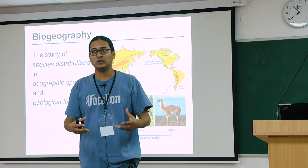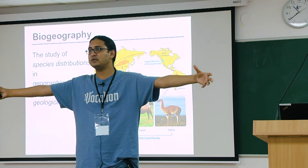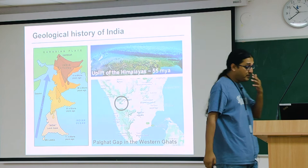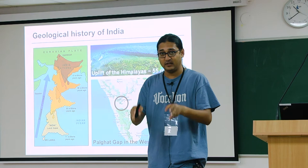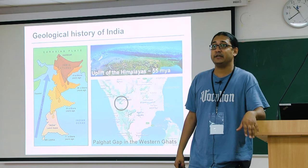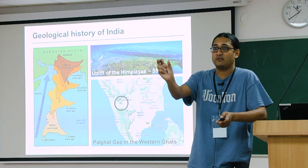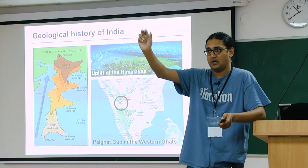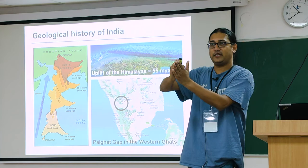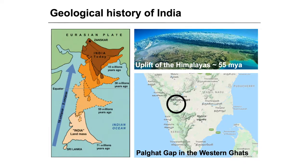For bird biogeography, we need to understand the geological history of India. India has been where it is only for the last 40 million years. 130 million years ago, India was attached to Madagascar and Africa — specifically to the east coast of Africa. Then Madagascar and India split from Africa and started moving northeast towards Eurasia. 90 million years ago, Madagascar split from India, and India started moving north. About 50 to 40 million years ago, the Indian plate collided with the Eurasian plate.